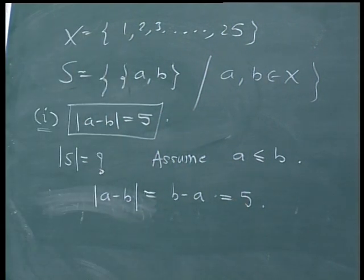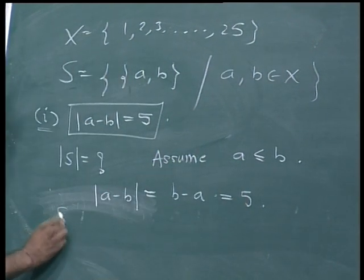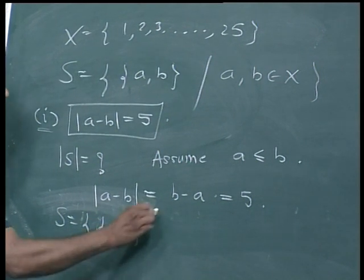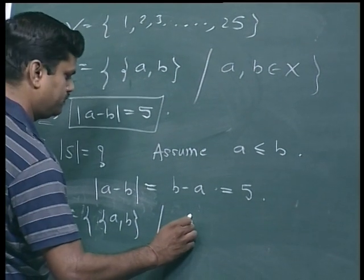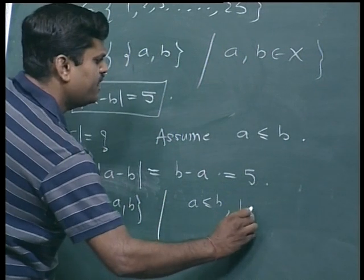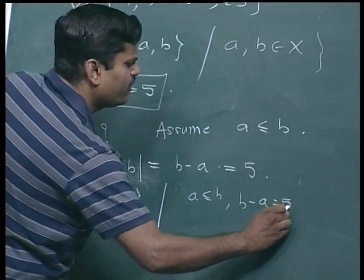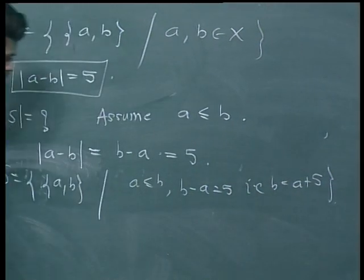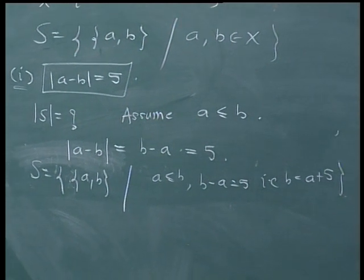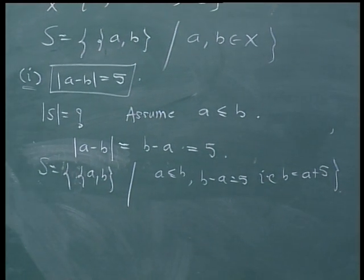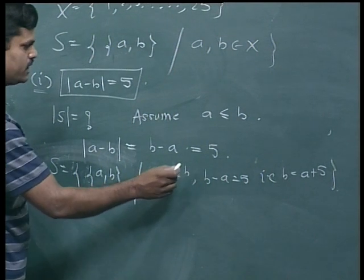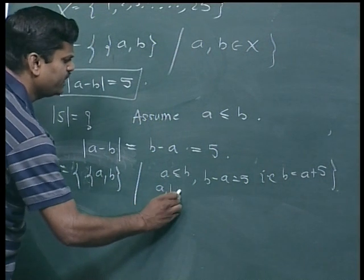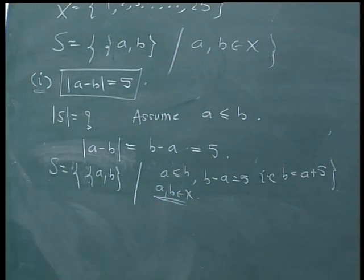We want b minus a equal to 5, so S is the set of all pairs (a, b) where a ≤ b and b minus a equals 5 — equivalently, b equals a plus 5. Both a and b are elements of X, which is also an important condition.